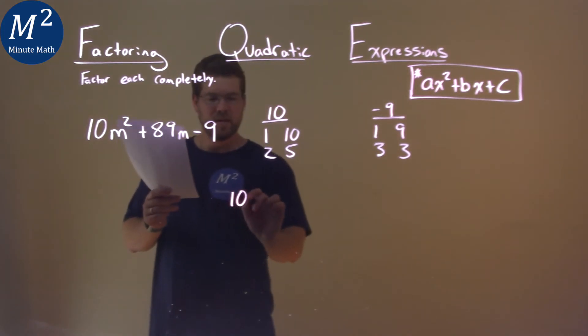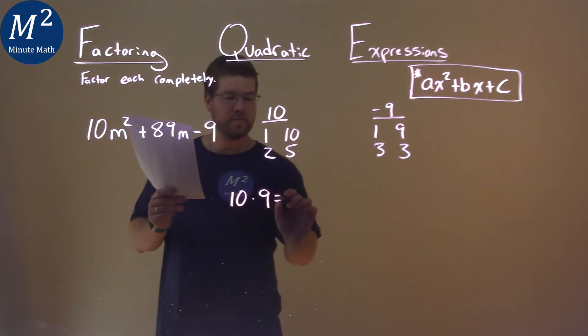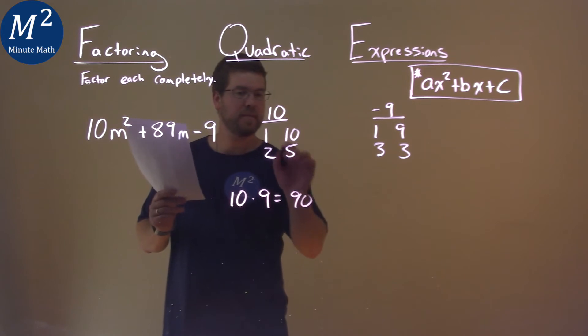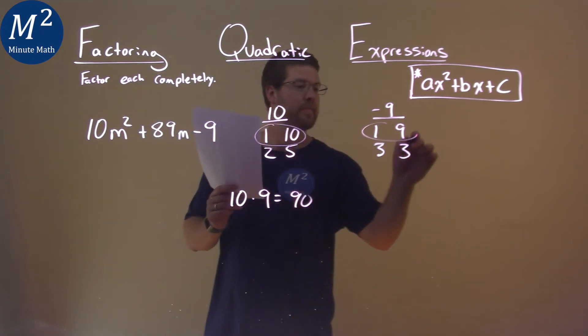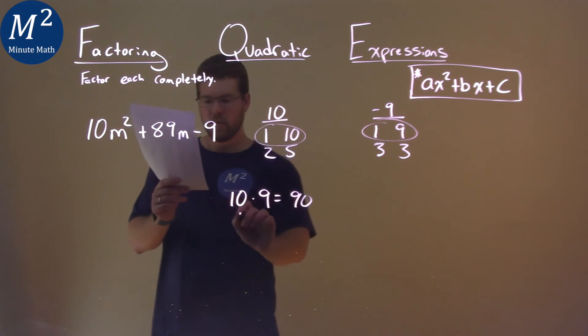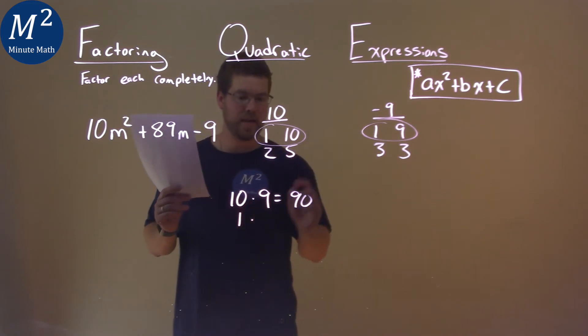So if we do 10 times positive 9, we get a positive 90. Then the other pairs would be 1 and the ones. 1 times, and we said the other one had to be negative, so negative 1 here is a negative 1.